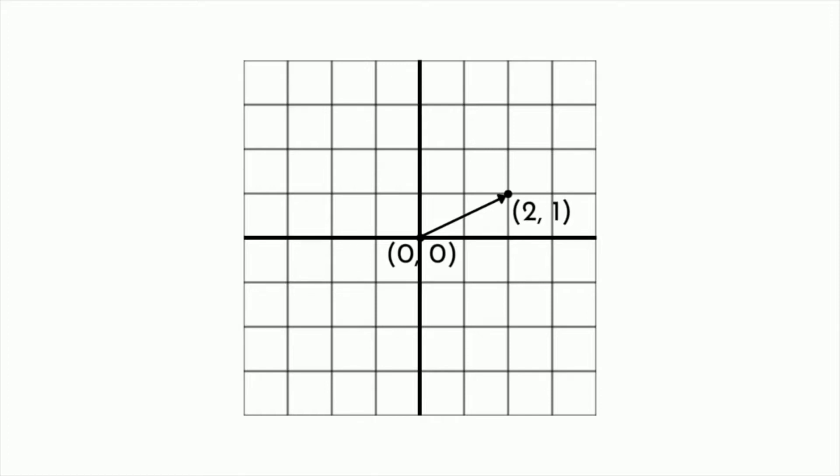So for example, if a point has coordinates 2, 1, then 2, 1 in square brackets is the vector that starts at the origin and moves right two units and up one unit. Note that we use square brackets for Cartesian vectors and round brackets for Cartesian coordinates.